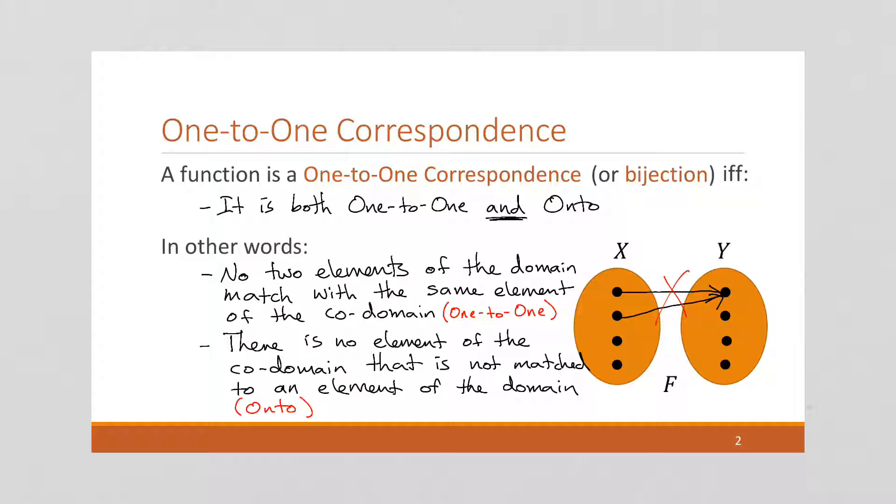And an example of that is that we can't have an open element of the codomain here. So we can't have all elements in the domain pointing at other elements, leaving this one open. That's not possible. So that's not onto.